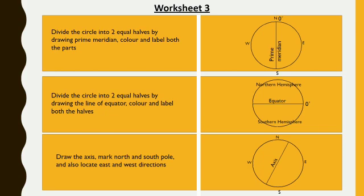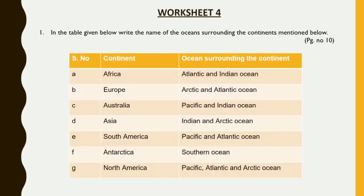The next one is page number 10, Worksheet 4. In the table given below, write the name of the oceans surrounding the continents mentioned. Look at the first continent: Africa. The oceans surrounding Africa are the Atlantic Ocean and the Indian Ocean.